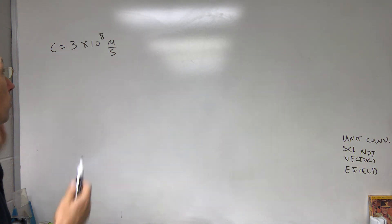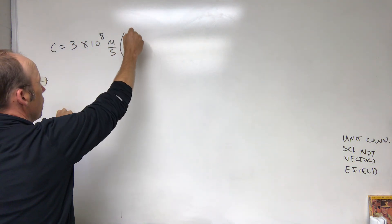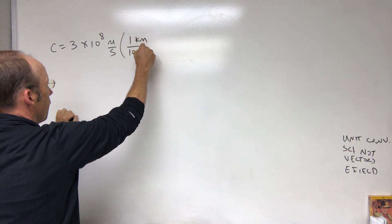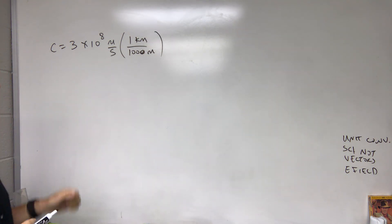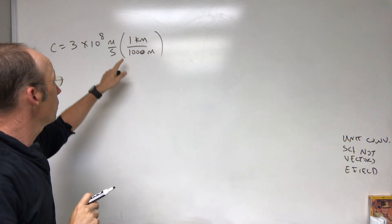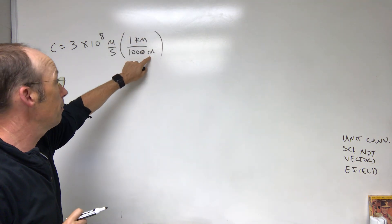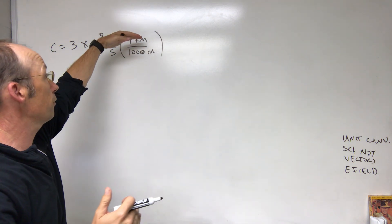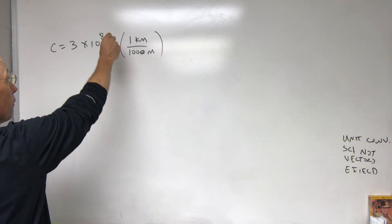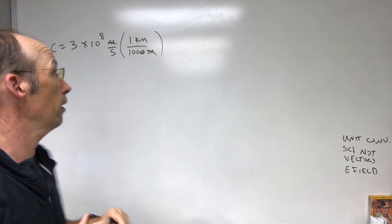First, I'll multiply by 1 kilometer over 1000 meters. It's important that kilometers are on top and meters on the bottom — if you flip it upside down, the meters won't cancel. That gives us kilometers per second. I won't multiply it out yet. Now I need to convert seconds to hours.